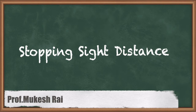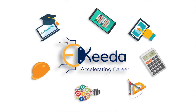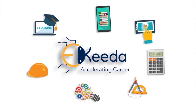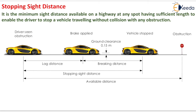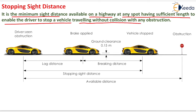Hello students, today we are going to study Stopping Sight Distance. It is defined as the minimum sight distance available on a highway at any spot having sufficient length to enable the driver to stop a vehicle traveling without collision with any obstruction. It is the minimum sight distance available on a particular highway which enables the driver to stop a vehicle without collision with any obstruction.